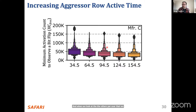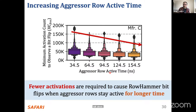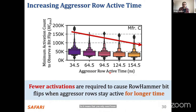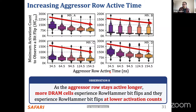I'll talk about what this means for current row hammer defenses toward the end of the presentation. A comprehensive observation from these two plots: as the aggressive row stays active longer, more DRAM cells experience row hammer bit flips, and they experience these bit flips at lower activation counts.